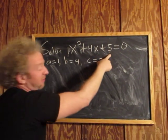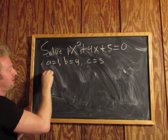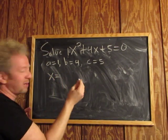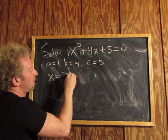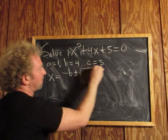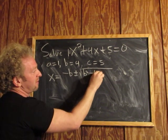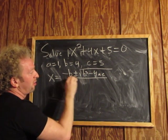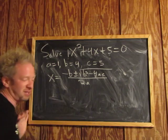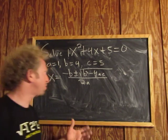So a is 1, b is 4, c is 5. Then the formula is x equals negative b plus or minus the square root of b squared minus 4ac all over 2 times a. Pretty easy to memorize the formula, and then you just plug everything in.